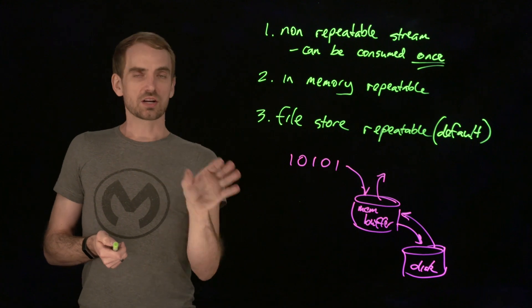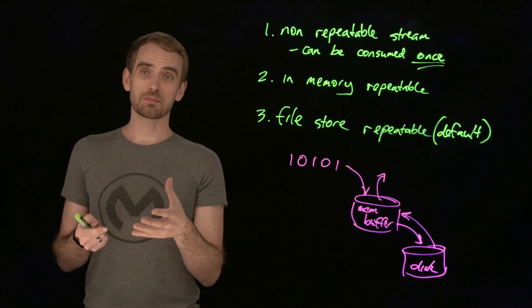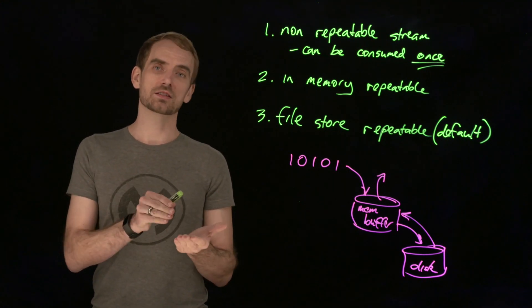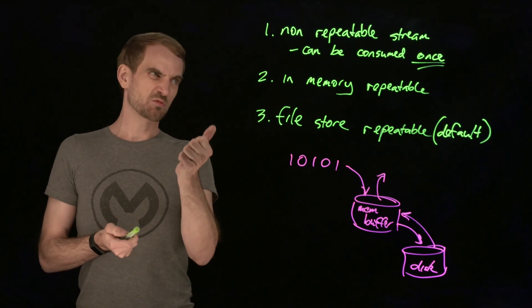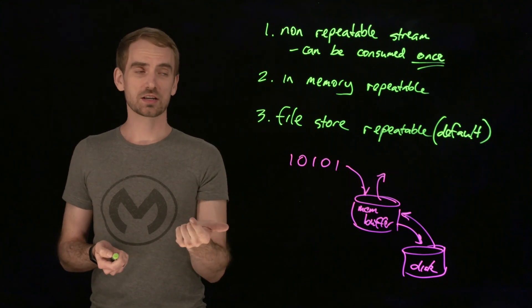As far as the other type, which is object streams, these are returned by certain types of connectors that might return a very large number of objects, but you don't want all of those objects to be kept in memory at any given time. So they are returned from things like the database connector or the Salesforce connector.